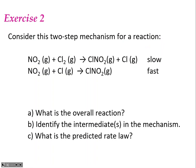Now it's your turn. Take a moment to look at this two-step mechanism for an overall reaction. First, find the overall balanced reaction. Second, identify any intermediates. Third, predict the rate law based off of the rate-determining step. Go ahead and take a moment to do all three things for Exercise 2.